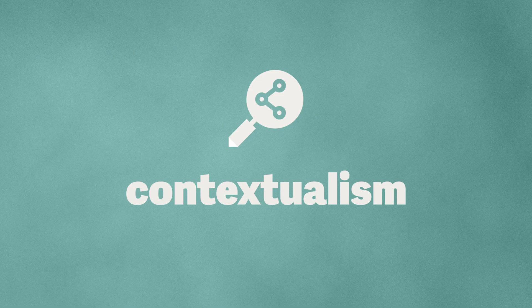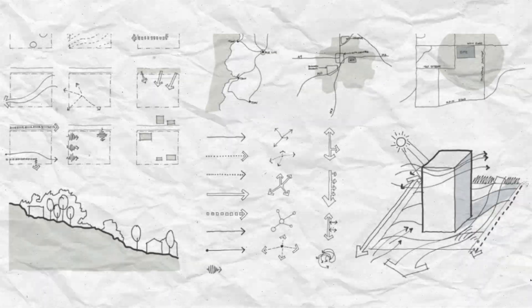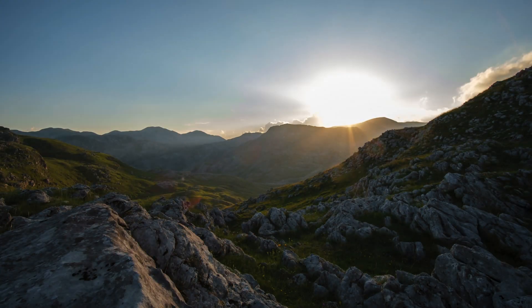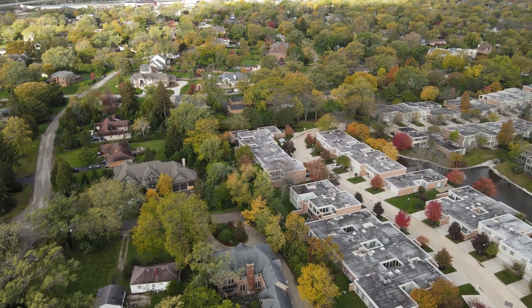Theory number two is contextualism. Contextualism emerged in the mid-20th century and sought to move away from the standardization and uniformity of modern architecture. This theory suggests that innovative architecture should be more site-specific and relate to its context. Designing a building should take into consideration factors like topography, environment, climate, local vegetation, and the surrounding buildings and landscape. Additionally, architecture should be sensitive to the physical environment and social-cultural context.